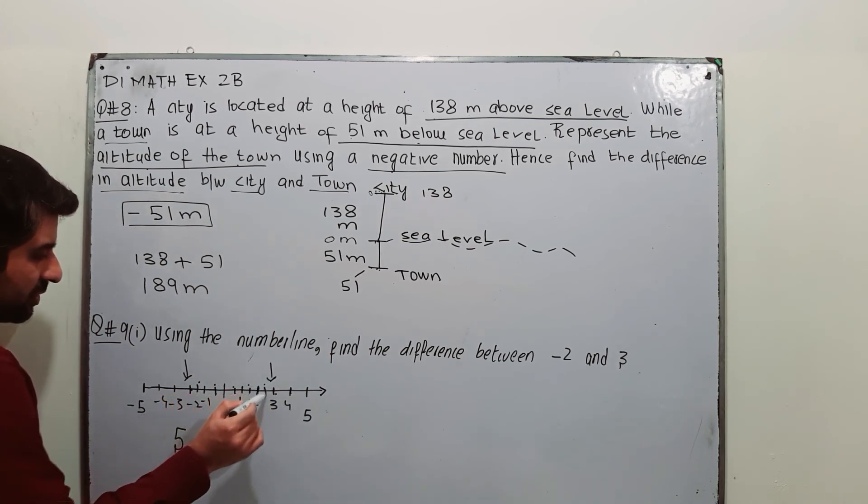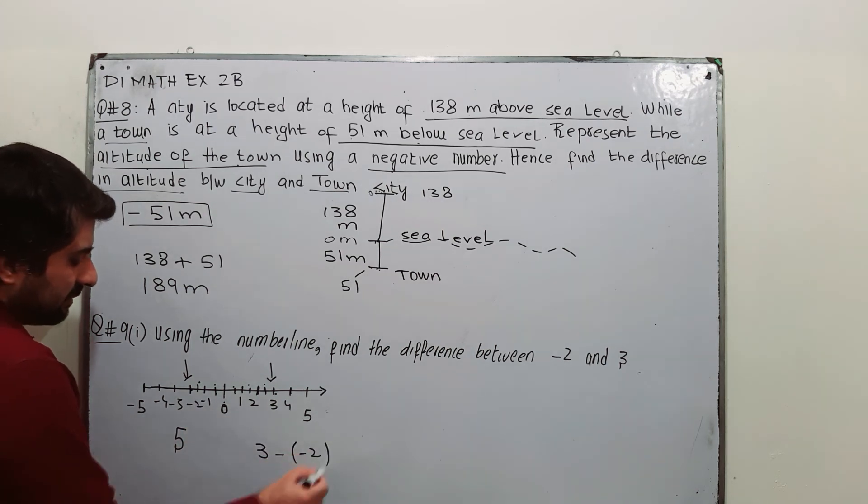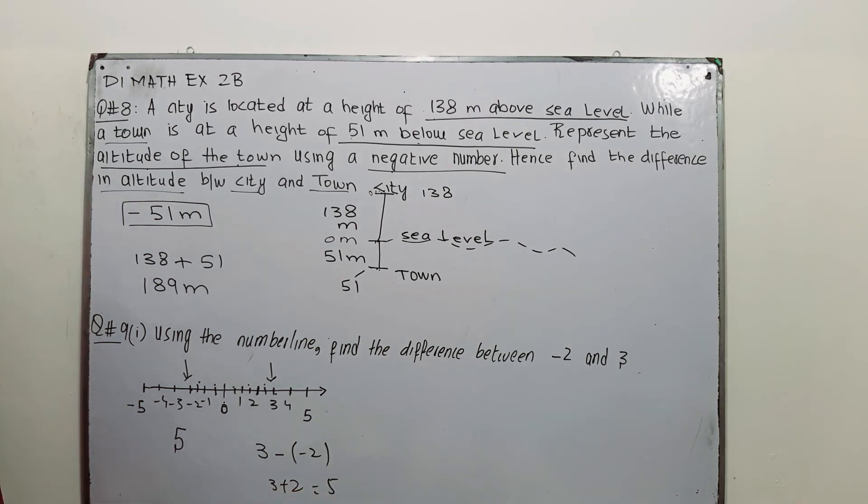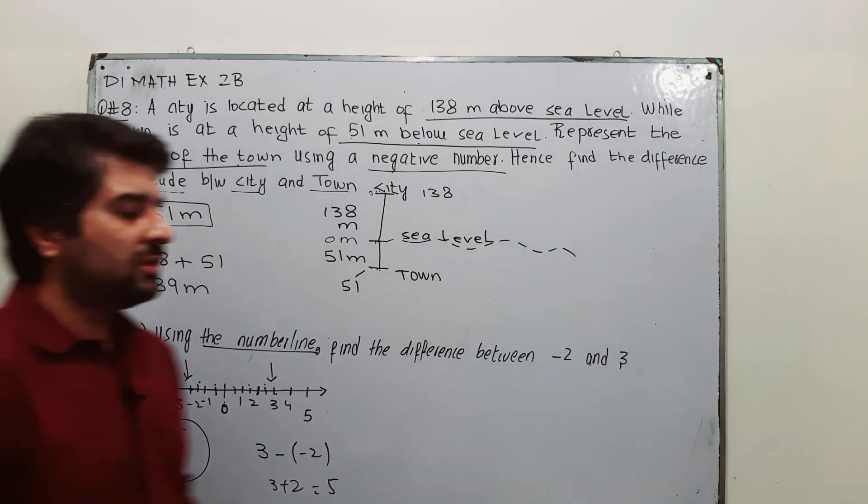The difference between -2 and 3 is 5 units. 1 unit, 2 units, 3 units, 4 units, 5 units. And if you want to do it manually then 3 minus (-2) is 3 plus 2, which is equal to 5. So this is the solution using the number line. This is how you are going to solve this question.